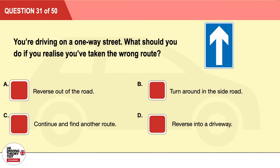Question 31: You're driving on a one-way street. What should you do if you realize you've taken the wrong route? A: Reverse out of the road. B: Turn around in a side road. C: Continue and find another route. D: Reverse into a driveway. The correct answer is C: continue and find another route.